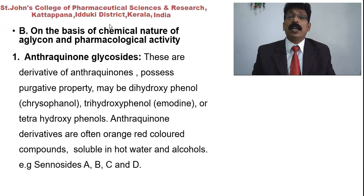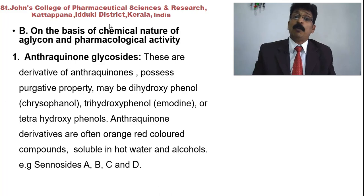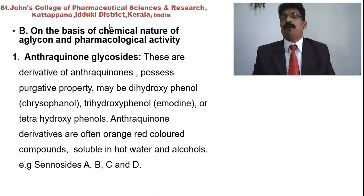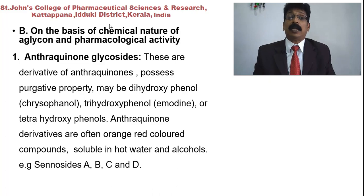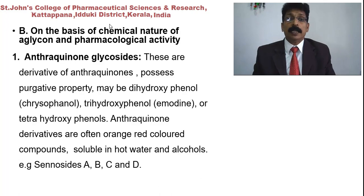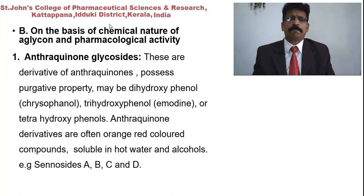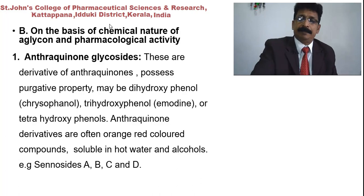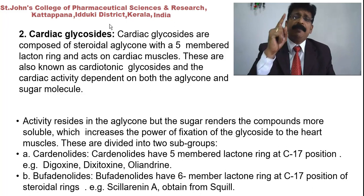On the basis of the chemical structure of the aglycon or pharmacological activity, glycosides can also be classified. Number one: anthraquinone glycosides, derived from anthraquinones — quinone-based five and six-membered ring compounds. These possess purgative property, which is a higher level of laxative action used for constipation. Anthraquinone glycosides may be dihydroxyphenol types such as chrysophanol, trihydroxyphenol types such as emodin, or tetrahydroxyphenol types. Anthraquinone derivatives are often orange-colored compounds soluble in hot water and alcohol.